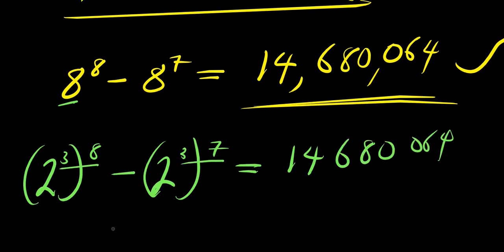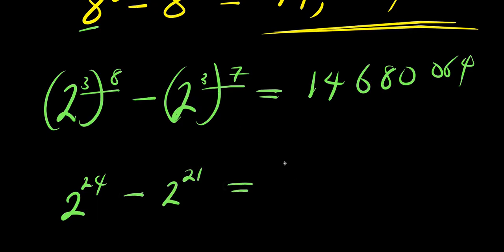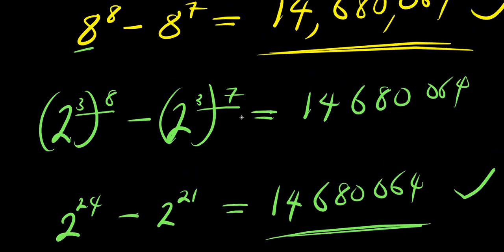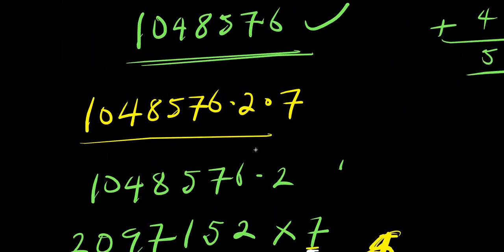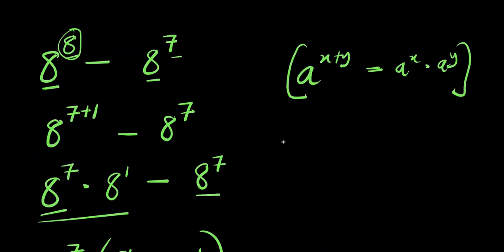If you multiply the exponents, that means it is the same as writing 2^24 minus 2^21, because 3 times 8 is 24 and 3 times 7 is 21. And this equals the same 14,680,064. So ladies and gentlemen, this is how you solve or evaluate this without the use of a calculator, step by step. Please subscribe, share this video with your friends, and drop a comment. Thank you and see you again.